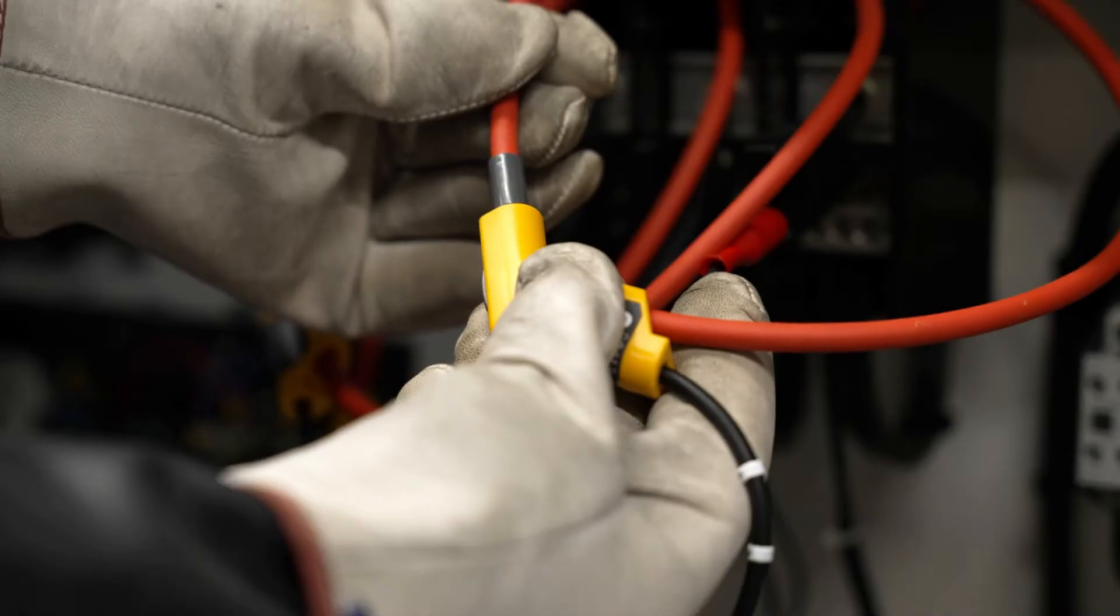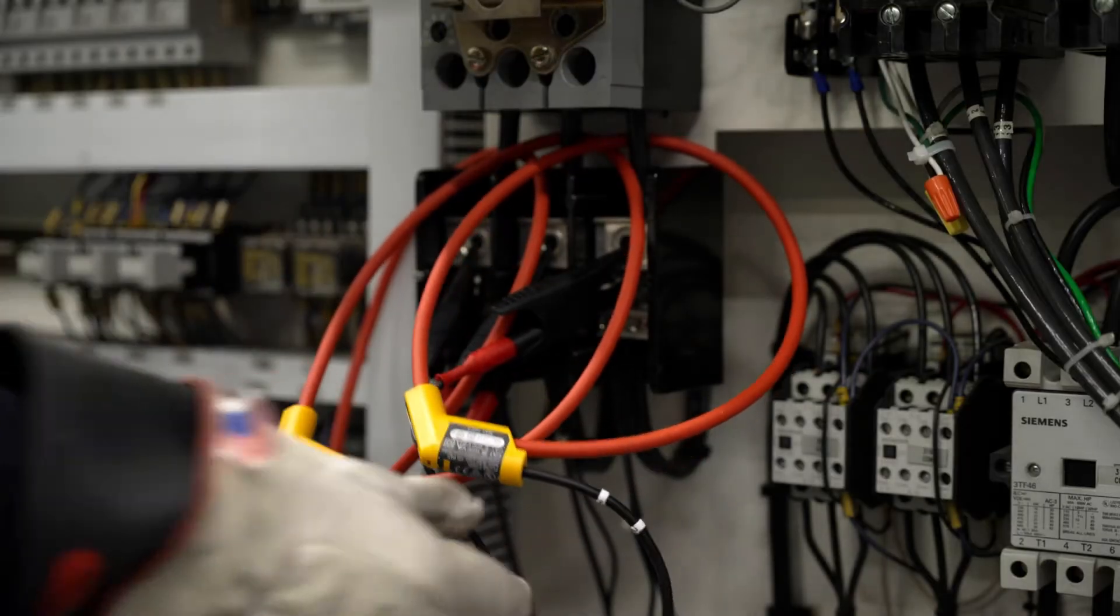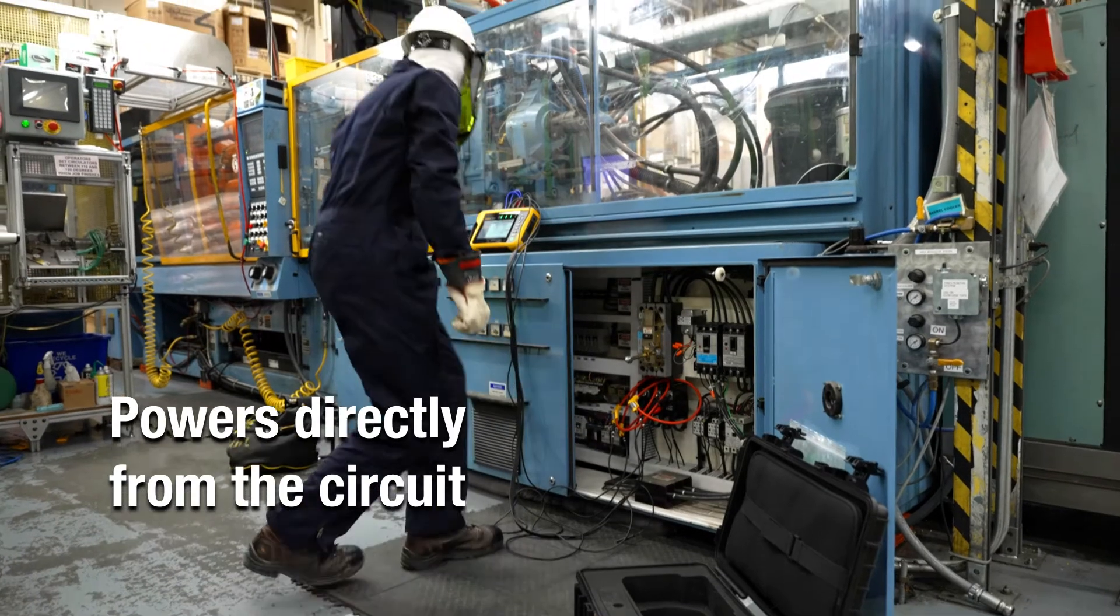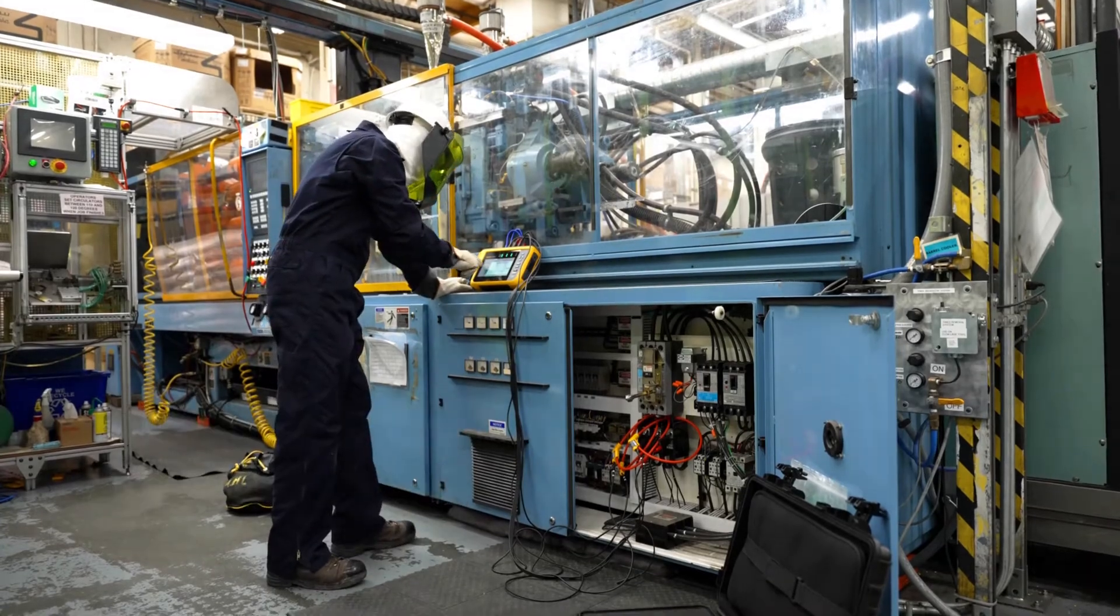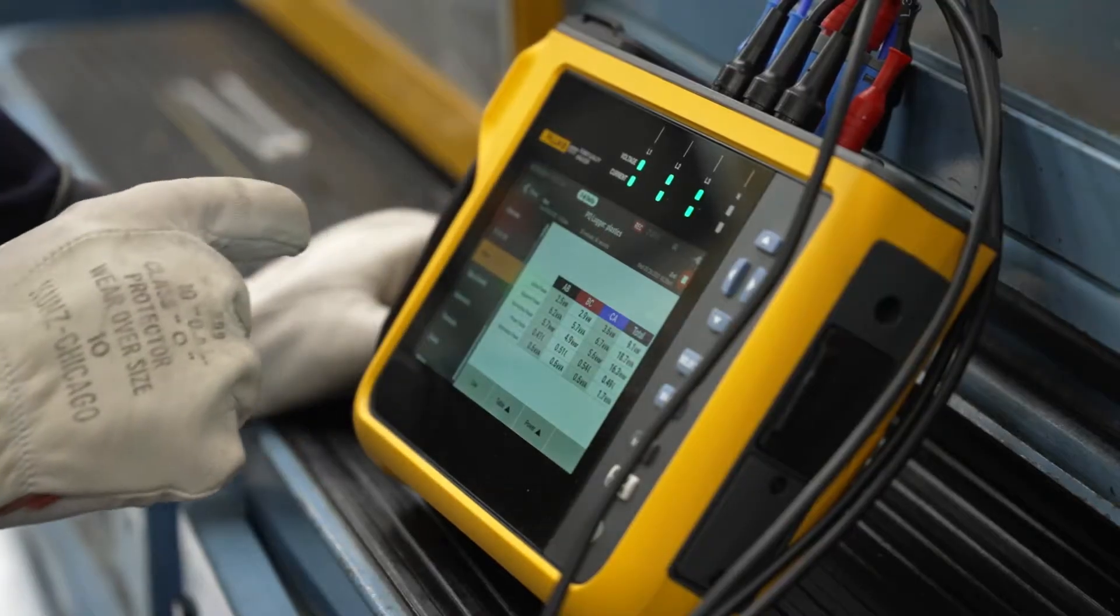The Fluke 1770 Series conveniently powers directly from the circuit you are measuring, so you won't need an electrical outlet or have to worry about failing batteries.